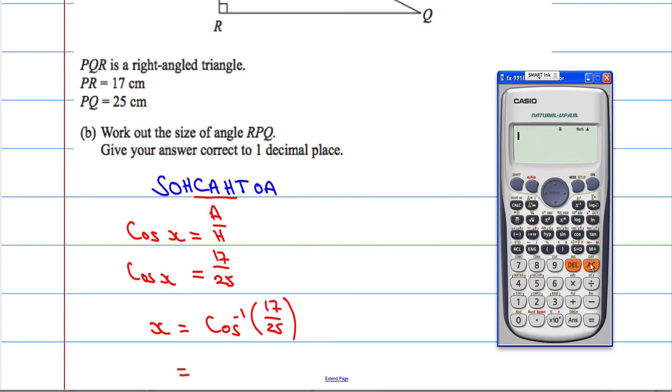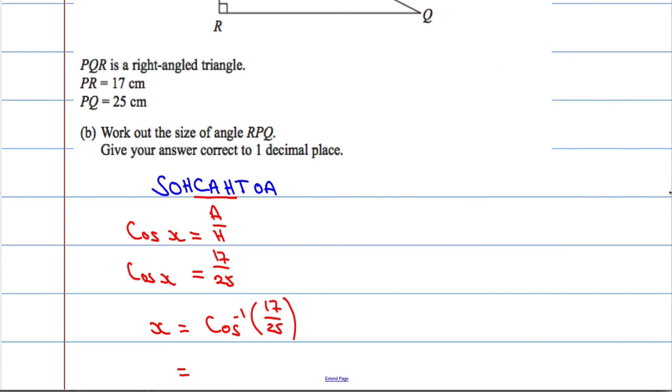I'll take it with the calculator. I need the inverse cosine, so I'm going to hit shift, cosine. Inverse cosine, 17 over 25, close off the brackets. And that equals to one decimal place, 47.2. And that is the answer.